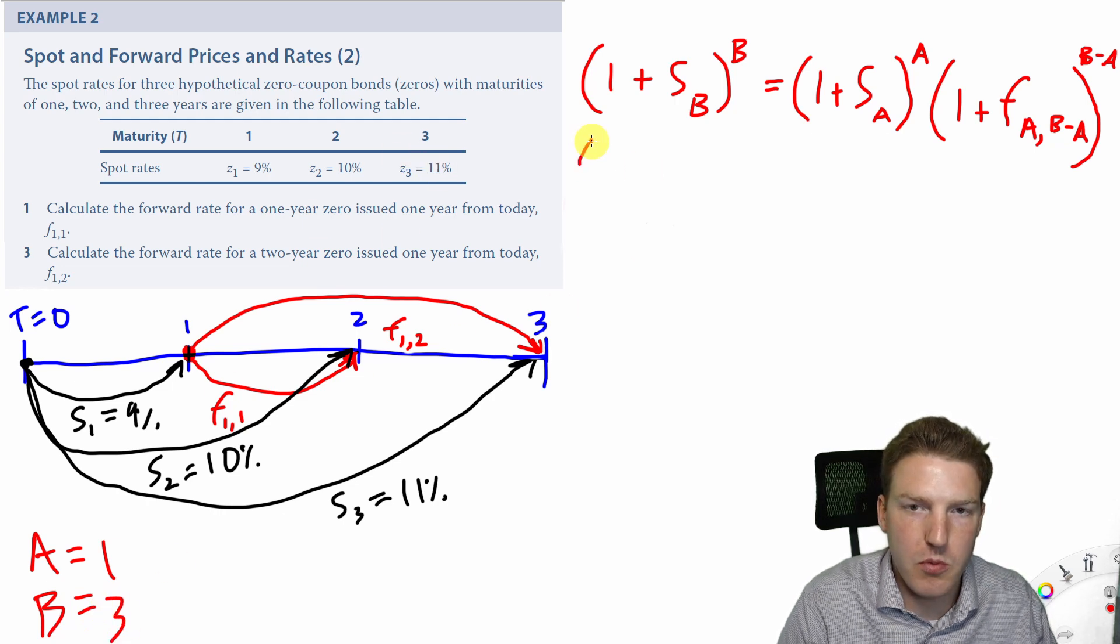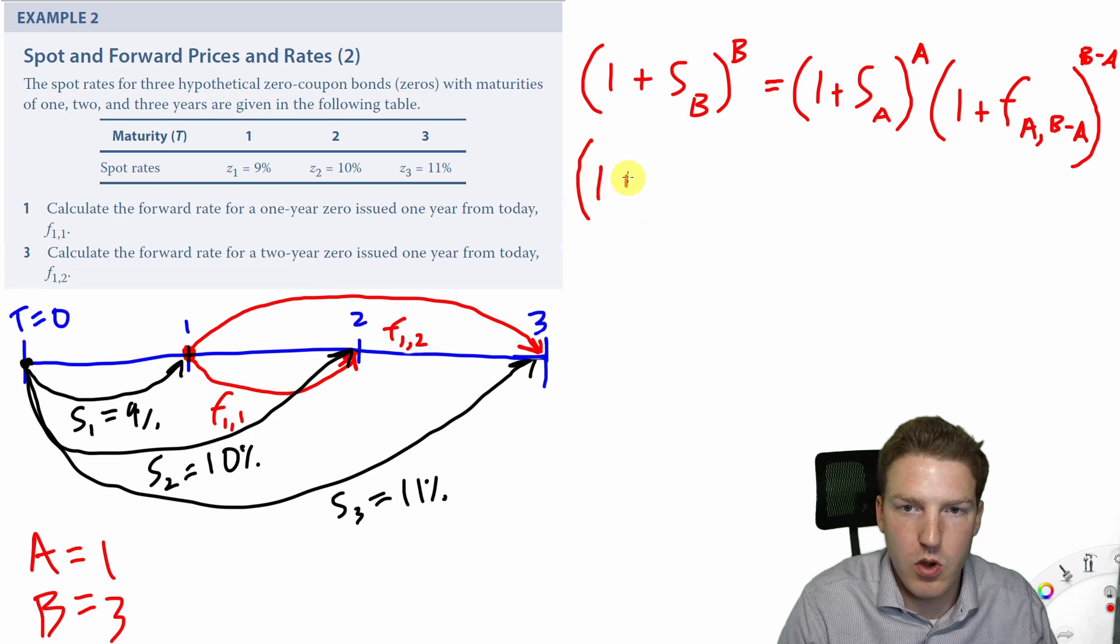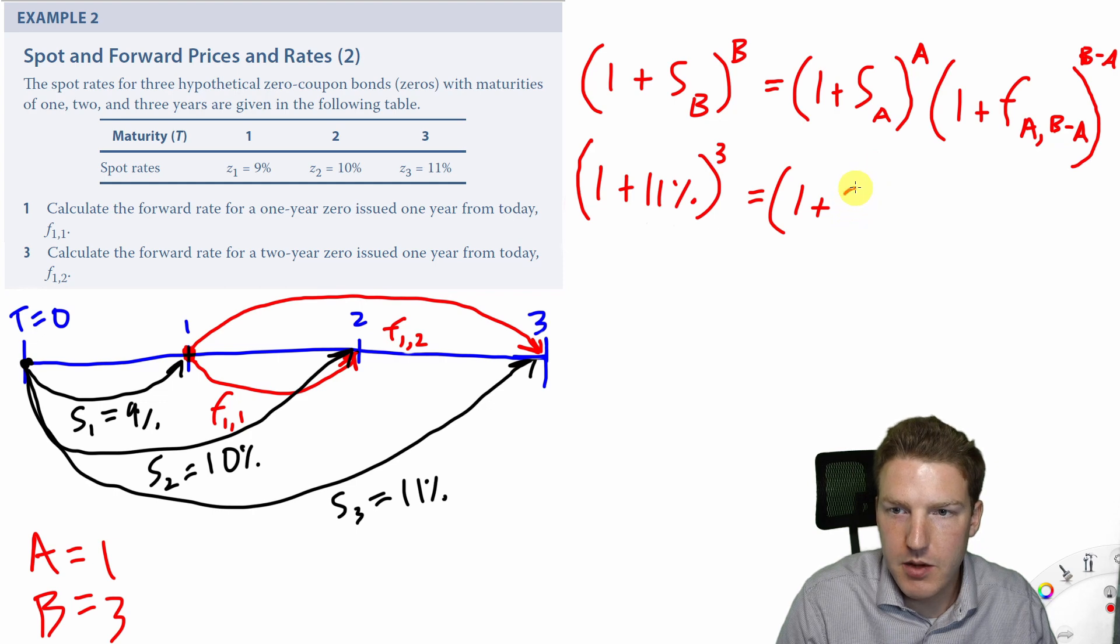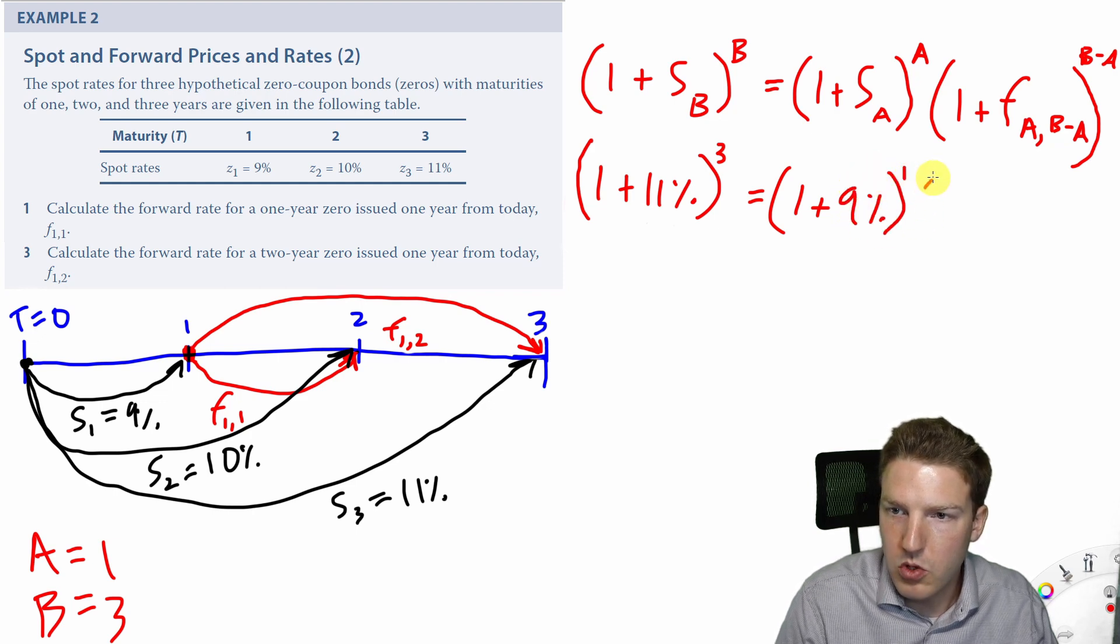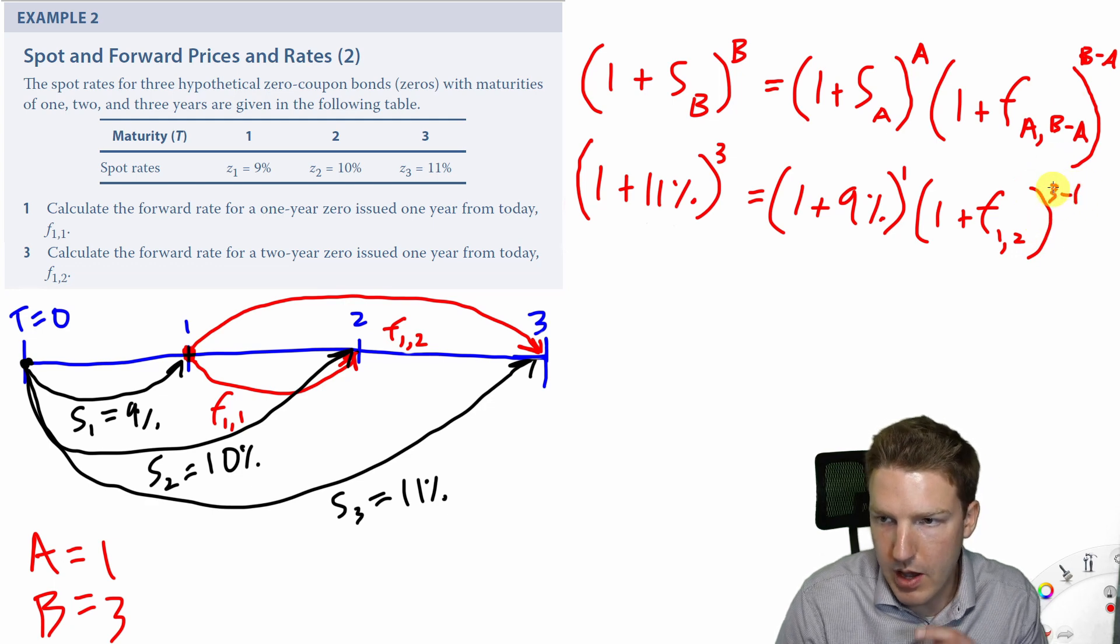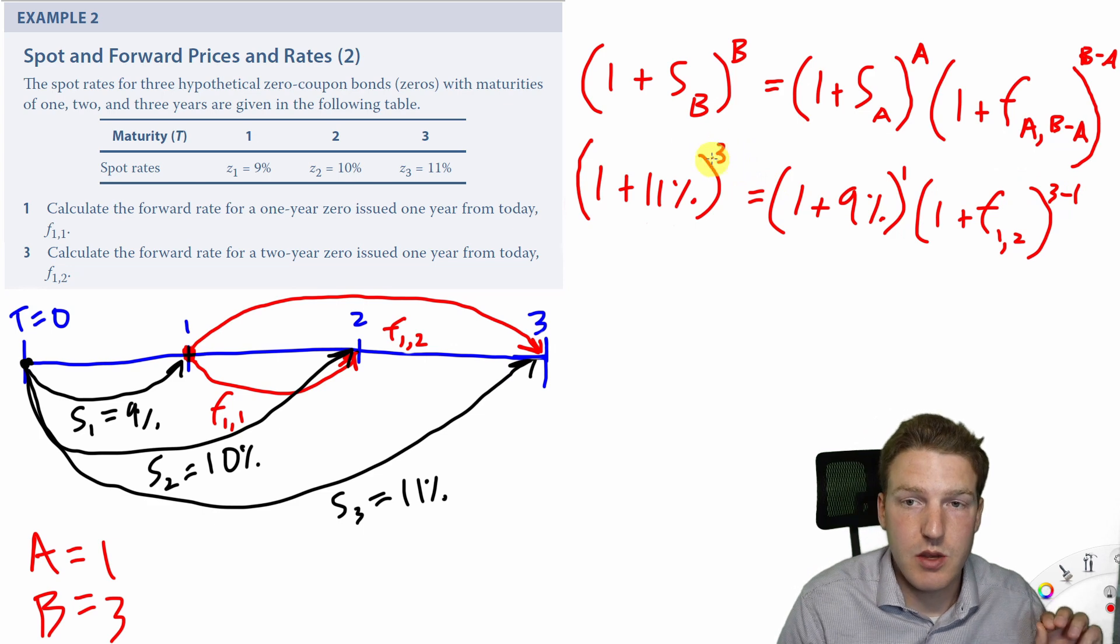We can solve it with the same formula as the previous example. So 1 plus the 3 year spot rate of 11% to the power of 3 is equal to 1 plus the 1 year spot rate of 9% to the power of 1 multiplied by 1 plus the forward rate, 1, 2, to the power of B minus A, which is 3 minus 1. So that will be 2.